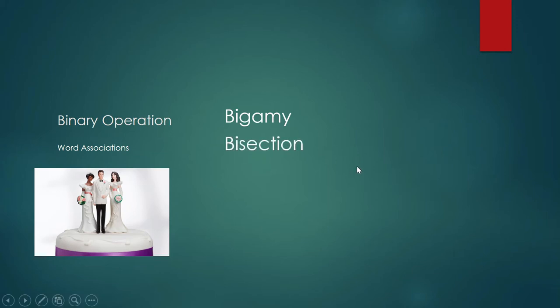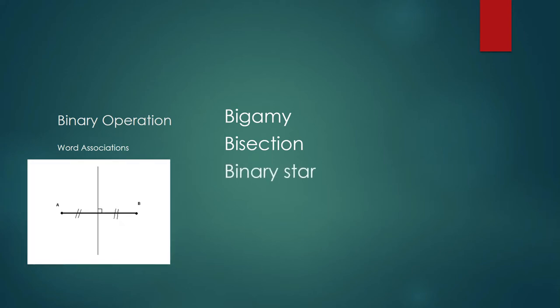Bisection — we had a lot of bisection in geometry. A line can cut a line segment; to bisect a line means to cut it into two congruent line segments. The same with bisecting an angle — to bisect an angle means to cut it into two congruent angles.